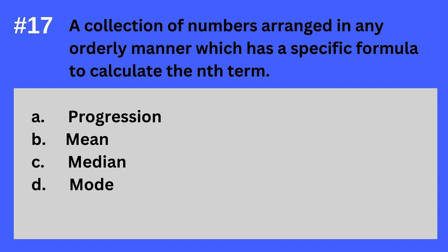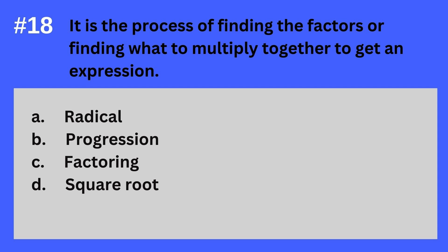Question 17. A collection of numbers arranged in any orderly manner which has a specific formula to calculate the nth term. Question 18. It is the process of finding the factors, or finding what to multiply together to get an expression. The answer? It's C. Factoring.